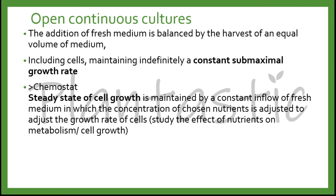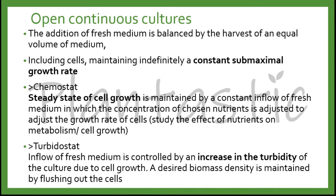Open continuous culture can be further split into two types. First, chemostat: the steady state of cell growth is maintained by constant inflow of fresh medium, in which the concentration of chosen nutrients is adjusted to control the growth rate of the cells, to study the effect of nutrients on metabolism and cell growth. The other type is turbidostat, whereby the inflow of fresh medium is controlled by an increase in the turbidity of the culture due to cell growth, and a desired biomass density is maintained by flushing out the cells.